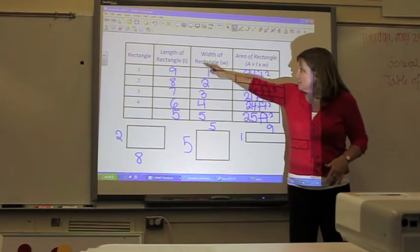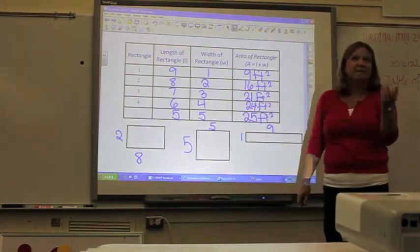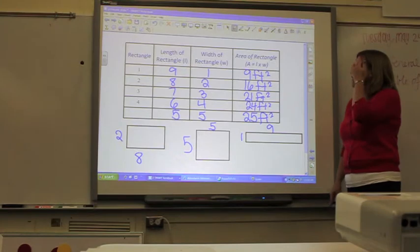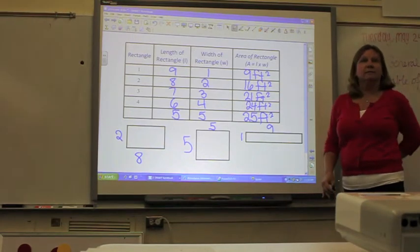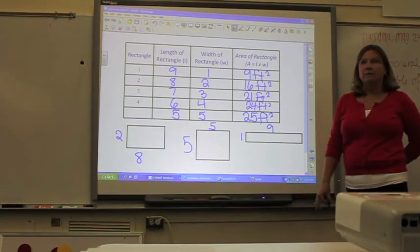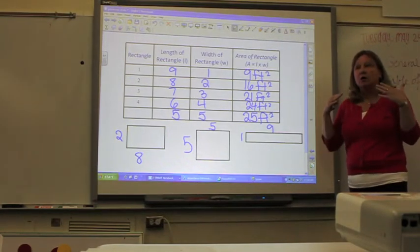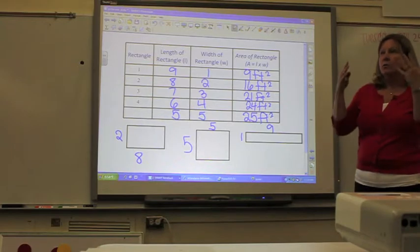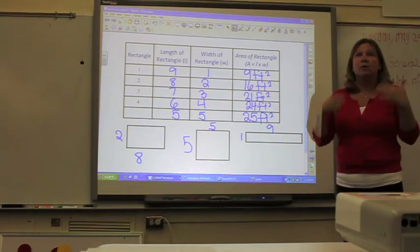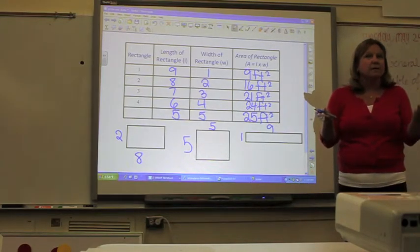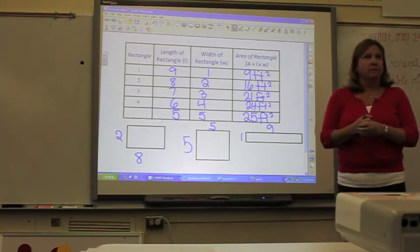They did theirs in order which makes it really obvious that there's a pattern in these. Which one had the highest area? 5 and 5. What is that one? 25 square. It's a square. So if you're going to make a garden or a dog run or something and you have some fencing, and you want the most space, what figure do you want to make? The square.